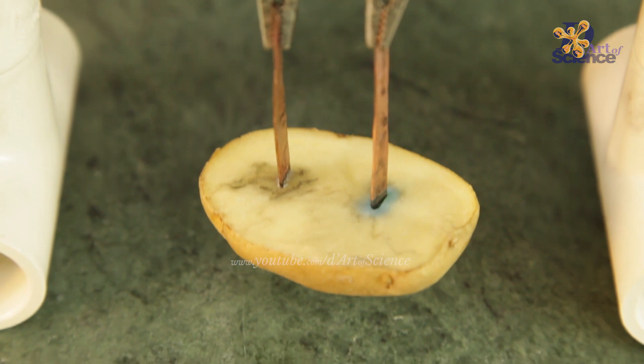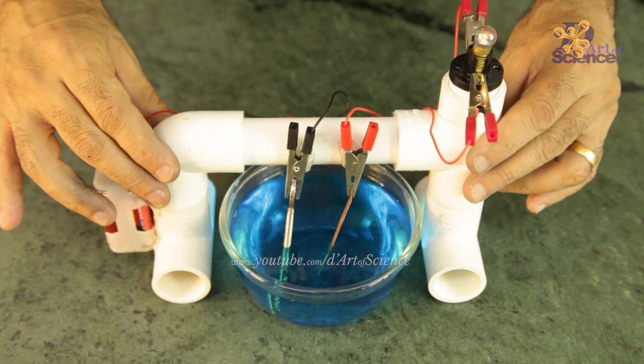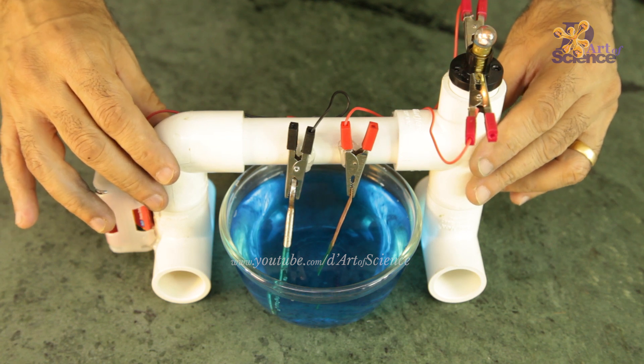We saw that in the potato, the colour had started spreading from the anode. The metal which needs to be coated needs to be the cathode, therefore connected to the negative terminal of the battery.